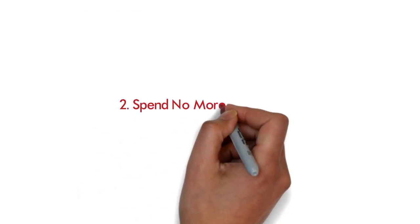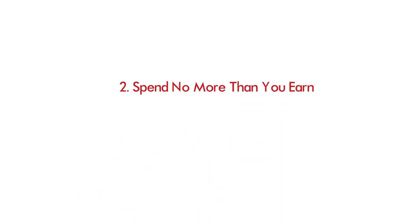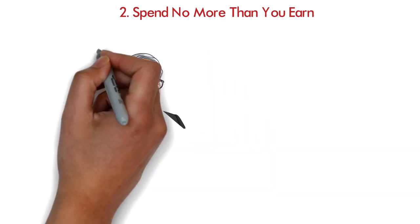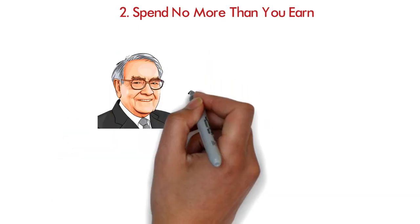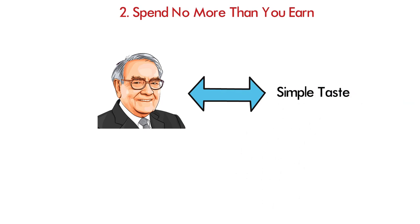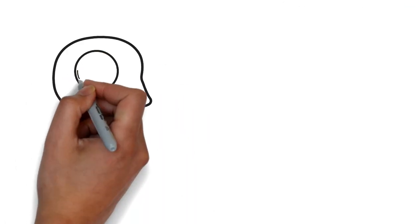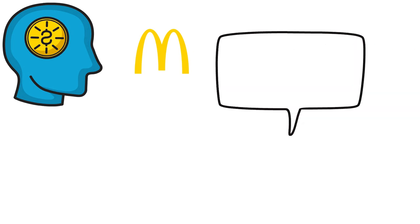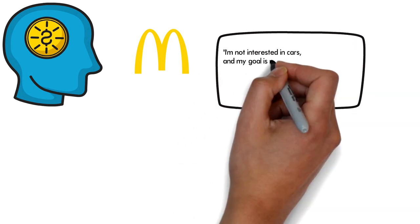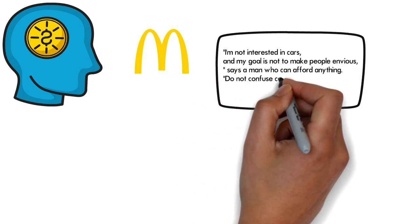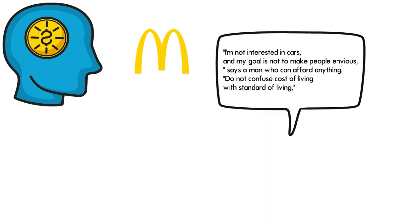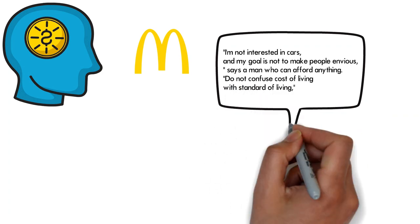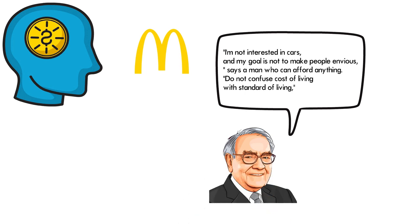2. Spend no more than you earn. If you were in Buffett's shoes, you might imagine living an extravagant lifestyle. Despite this, the billionaire has simple tastes. There's a lot to be learned from wanting less. He's known for preferring Coke and McDonald's hamburgers over a $100 meal. I'm not interested in cars, and my goal is not to make people envious, says a man who can afford anything. Do not confuse cost of living with standard of living, Buffett advises. He advocates living within your means and income.